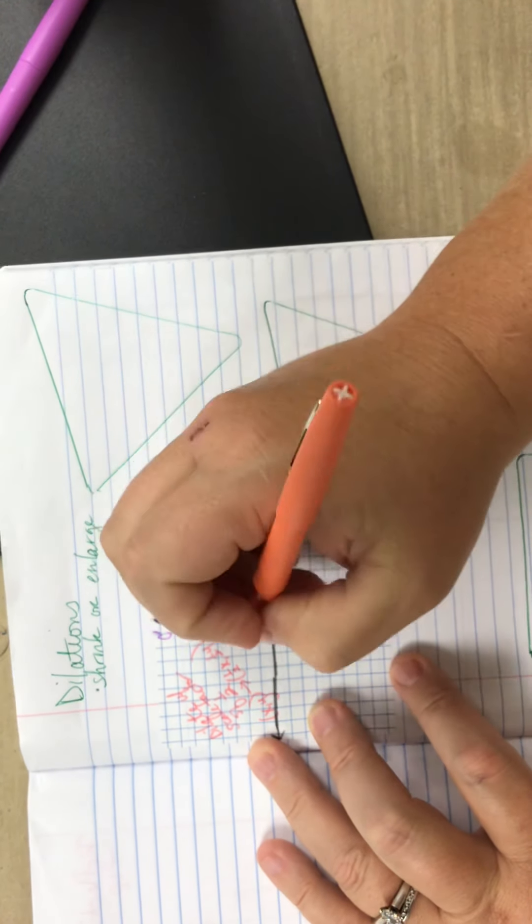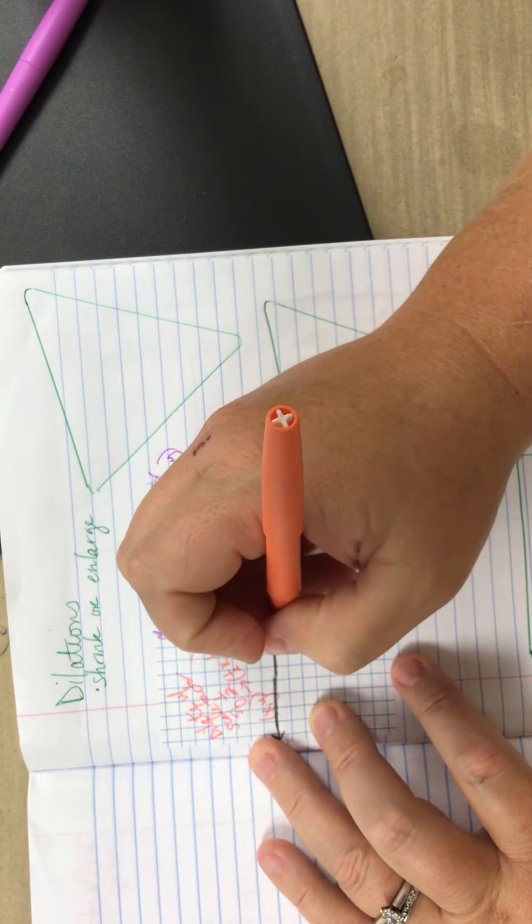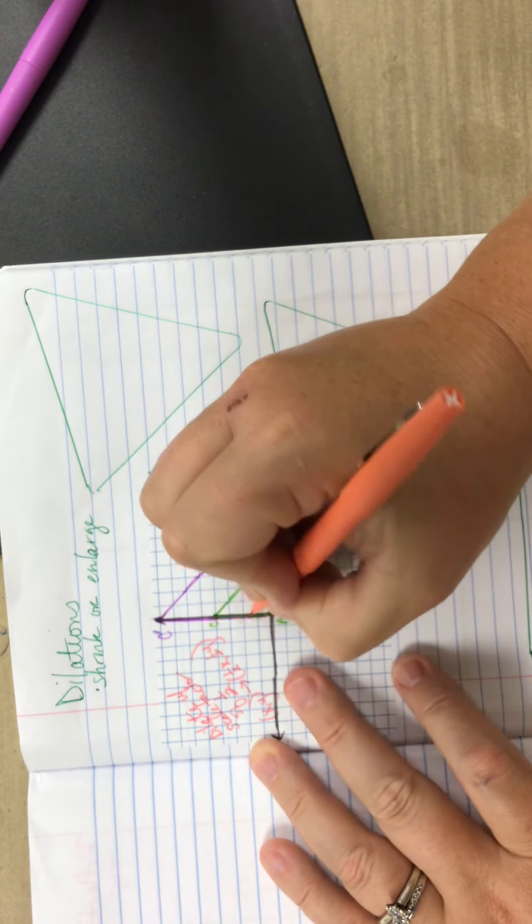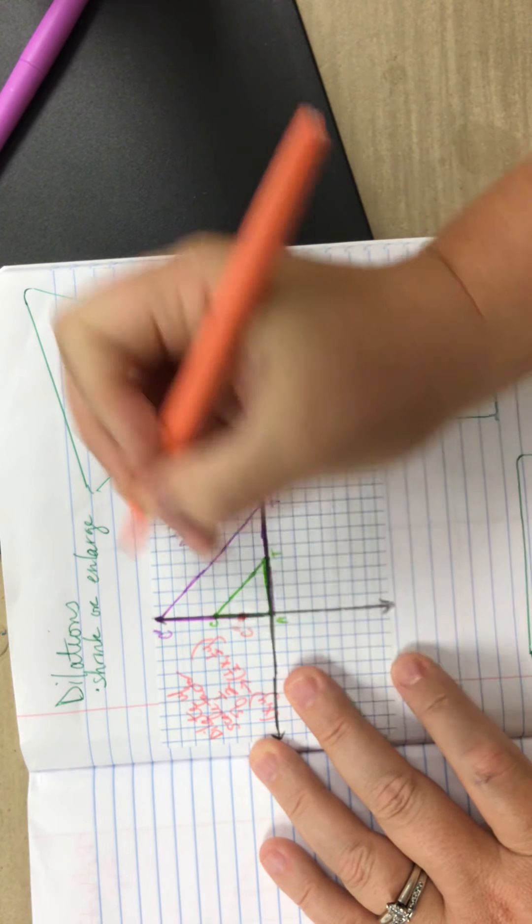Since C was at 0, 4, well, what's half of 4? Hopefully you're going to say 2. So C double prime is going to be right here at 0, 2.